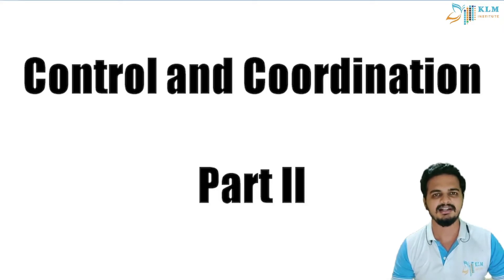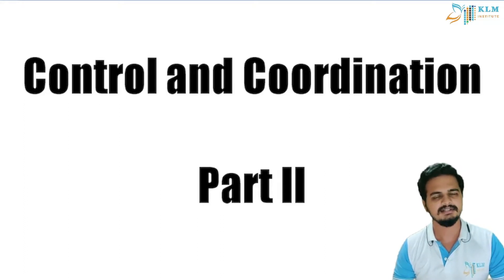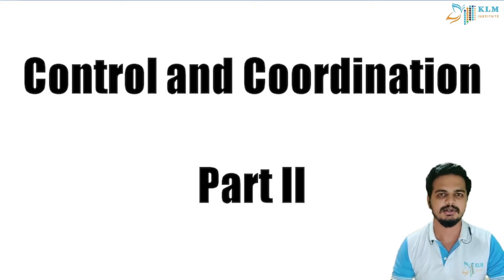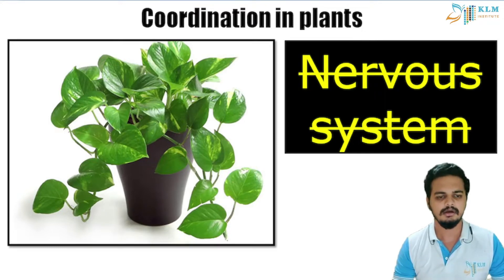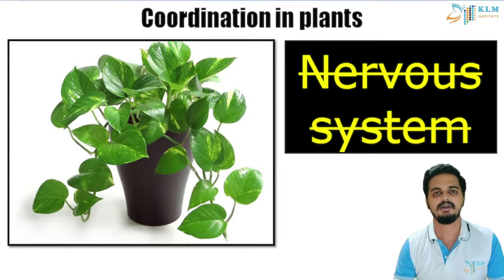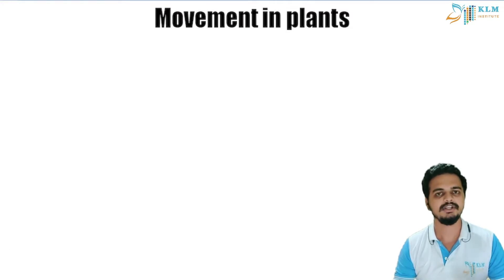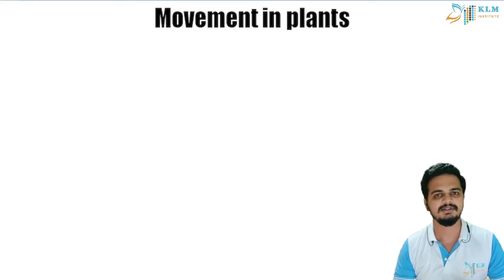Hello again students, this is the second part of the chapter Control and Coordination. In the previous video we learned that involuntary and voluntary movements of animals are controlled by the nervous system. But what about plants? They do not have any nervous system — they just have xylem and phloem. Some people have a misconception that plants do not move, but that is very wrong. Let's see a video and get back to the lesson.